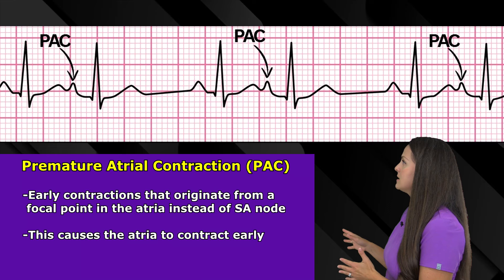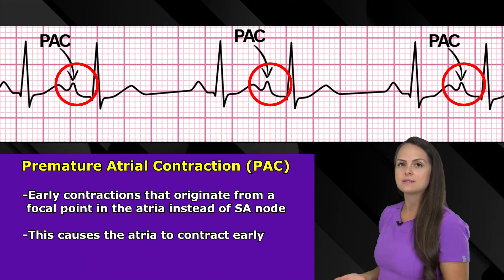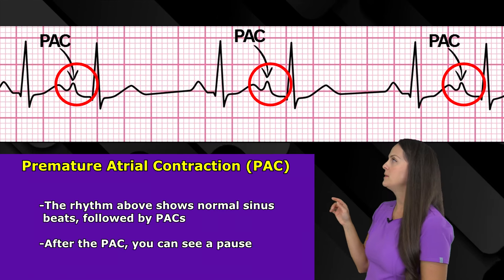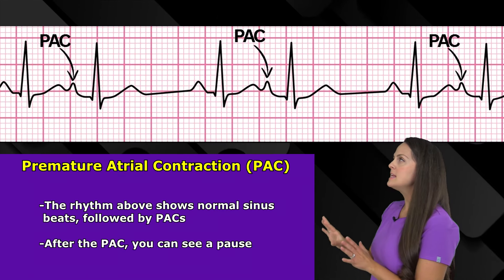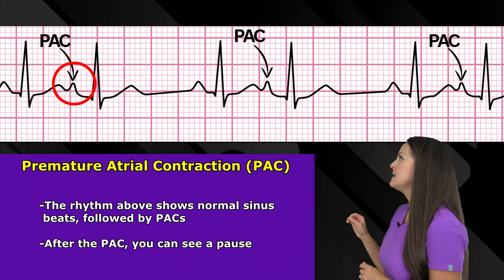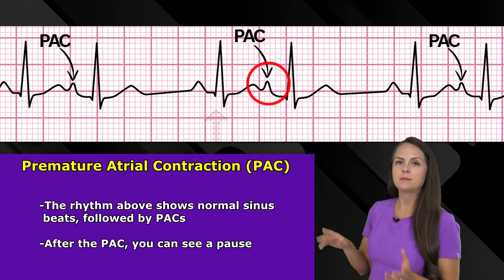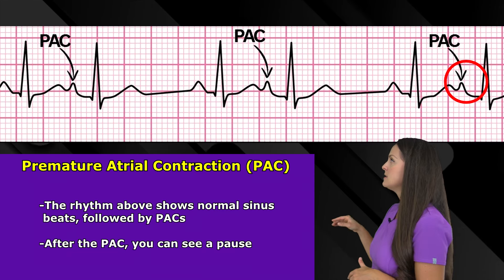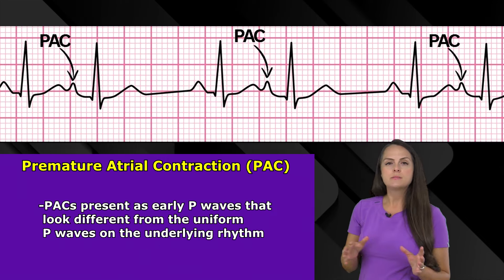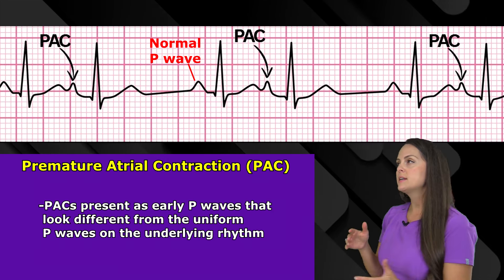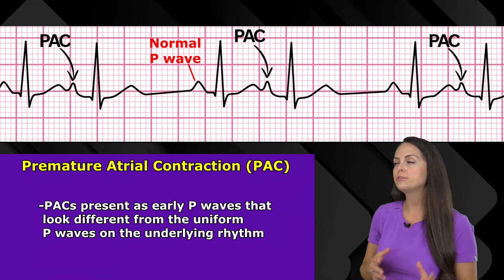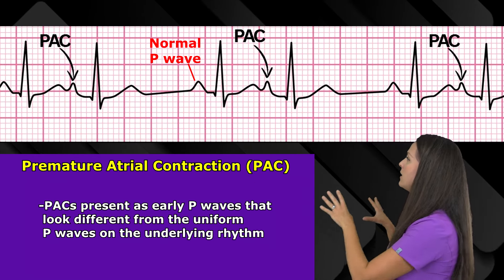Here on your screen, you can see an example of some PACs. We have a sinus beat, then an early premature beat — notice that early P wave looks different than the underlying P waves on this rhythm. We have sinus beat, PAC, sinus beat, PAC, sinus beat, PAC, and then some sinus beats. Notice after these PACs, we have a pause. These PACs present as early P waves that look different from the uniform, regular P waves of the underlying rhythm.